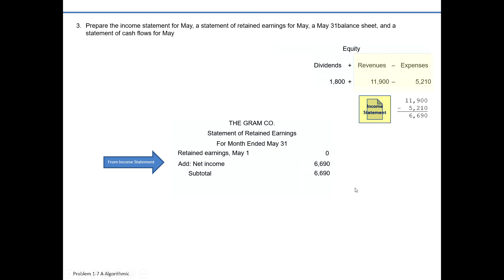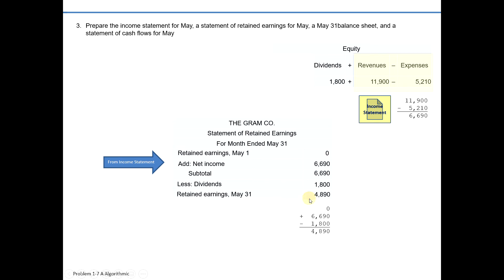We're not done yet. We want to subtract out any distributions to our stockholders in the form of dividends, because those are amounts not retained within the business. The total dividend amount was $1,800 — that's a subtraction from our retained earnings. So we subtract our $1,800 from the sum of our beginning balance of zero and net income of $6,690, and end May 31st with a retained earnings balance of $4,890.